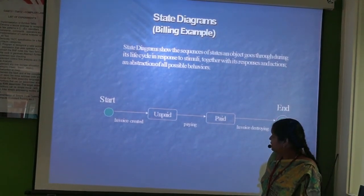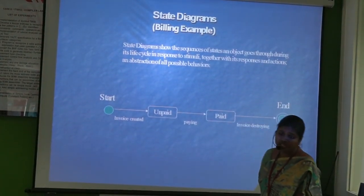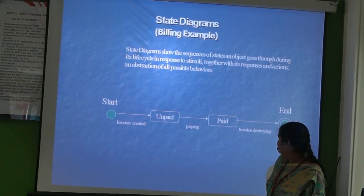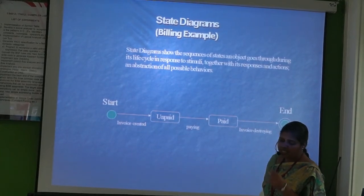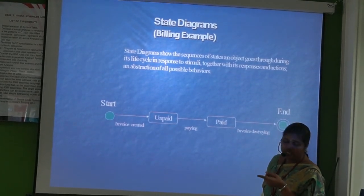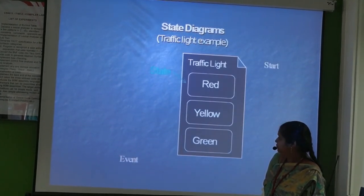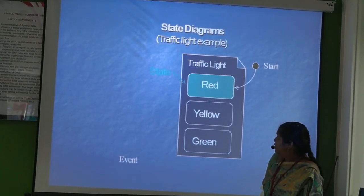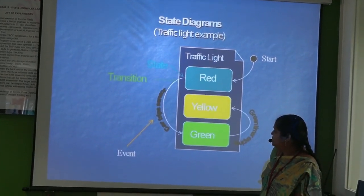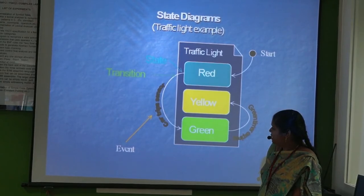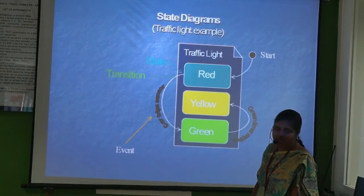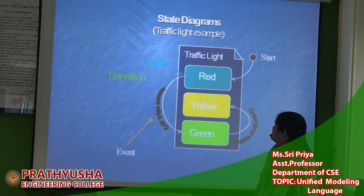Next is the state diagram. It represents the sequence of actions done by an object throughout its life cycle. For example, whether a payment is paid or not. There is a starting point and an ending point, each with their own notation. 'Paid' and 'unpaid' are the states. Another example is the traffic light: red, yellow, and green are the three states. The event that triggers a change — for example, the timer itself — is the event. The change from red to green is called a transition.